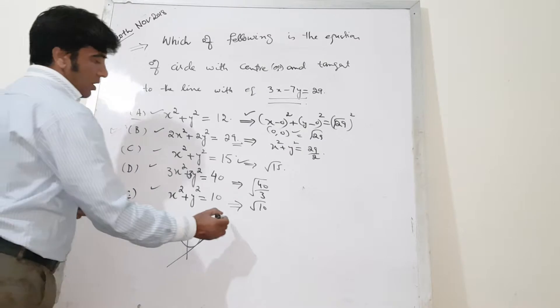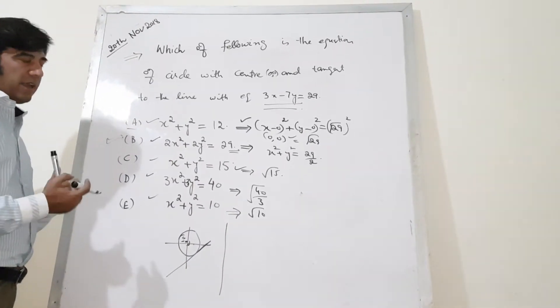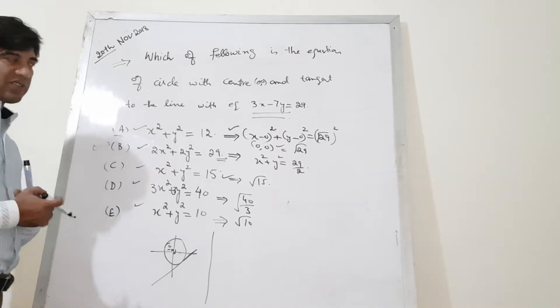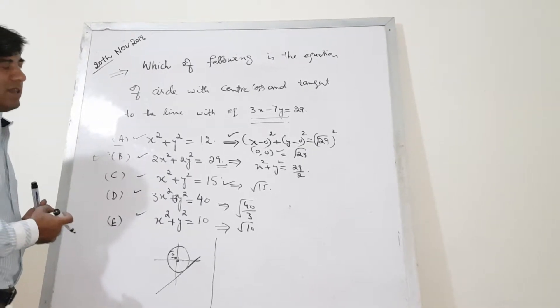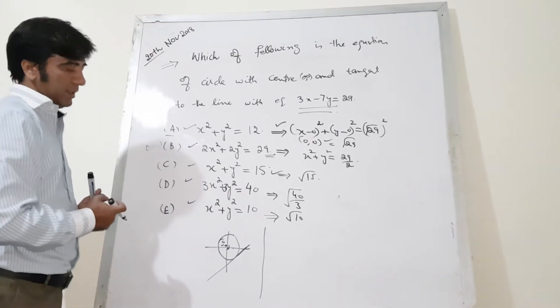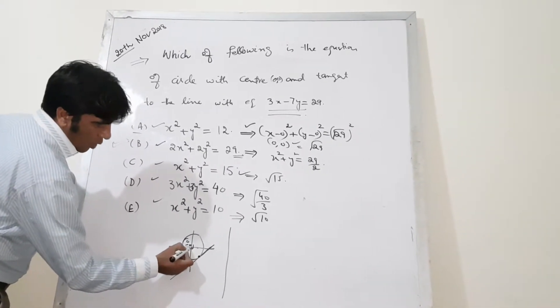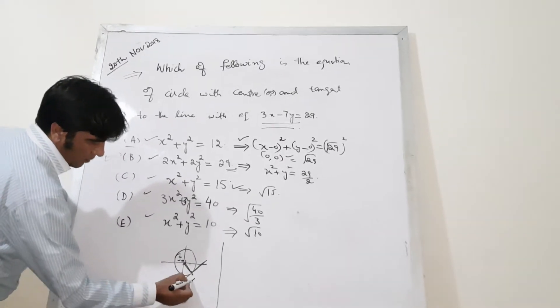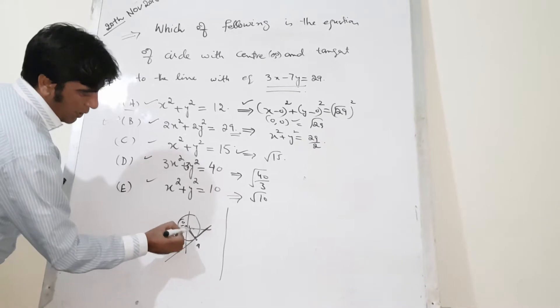Here you cannot find the direct answer. You need an extra step for this question. You must know how to calculate distance of a point from the line, because the closest point on this line is there which is tangent to the circle, and this distance will also be equal to the radius.